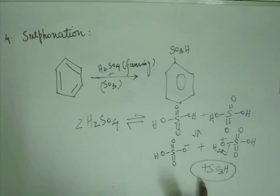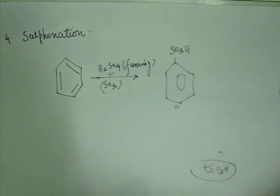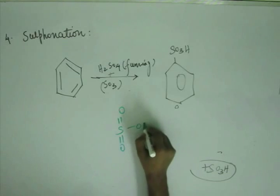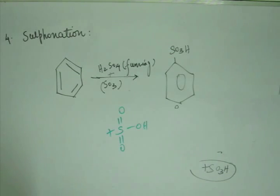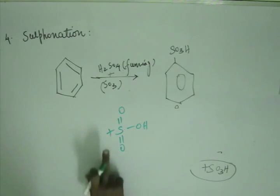An important point is that the sulfonyl ion is quite stable. The plus charge is on sulfur, whereas in nitronium ion the plus charge was on nitrogen. Sulfur is very low in electronegativity — it is rather electropositive — so it doesn't mind having a plus charge on itself, unlike oxygen, fluorine, chlorine, or nitrogen. So the plus charge on sulfur is not deadly unstable; it is quite stable.